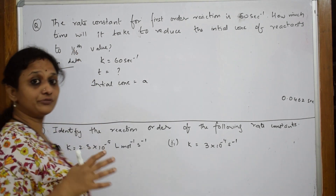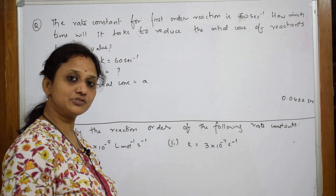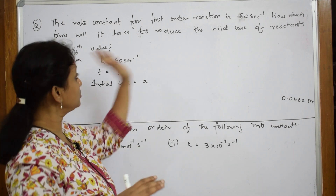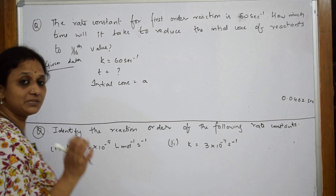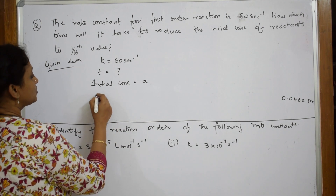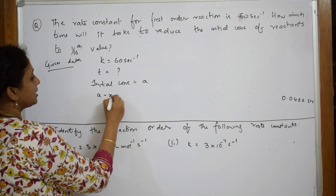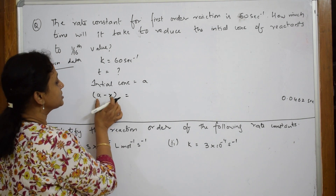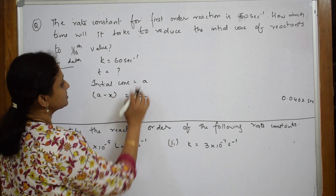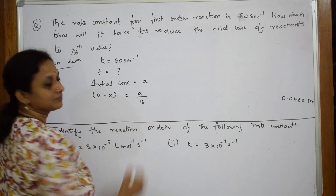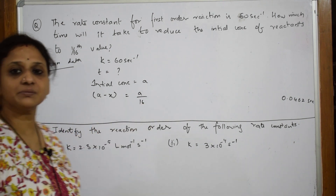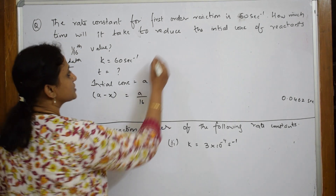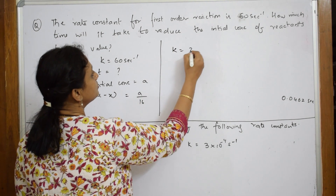In the first order rate equation, the initial concentration is represented by a. They want it reduced to one sixteenth of its value. That means from initial concentration a, it is reduced to a/16. So a minus x, which is the amount of reactant remaining, is equal to a/16.